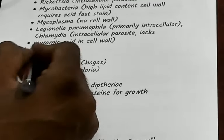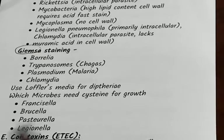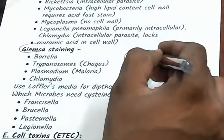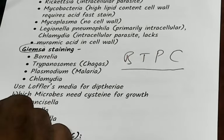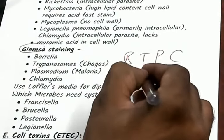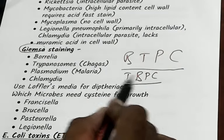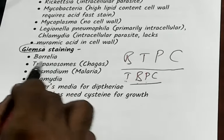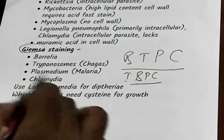Now, what are the four organisms for Giemsa staining that you need to remember? Borrelia, Trypanosoma, Plasmodium, and Chlamydia. What were the subjects that made you an ambitious student doctor? You became a topper by studying biology, physics, chemistry, right? So Giemsa staining: Borrelia, Trypanosoma, Plasmodium, and Chlamydia.